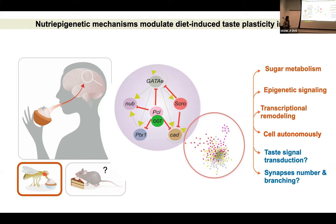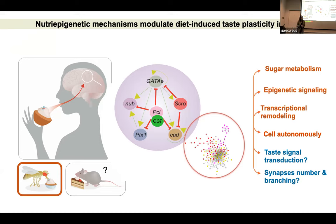We found that OGT and PRC2 together change the output of a transcriptional hub important for determining the properties of the sensory neurons. There is a network of genes controlled by this transcriptional hub that, when changed by the high sugar diet via this mechanism, essentially makes the sensory neurons lose some of their identity as sensory neurons, so that they're not functioning as well.